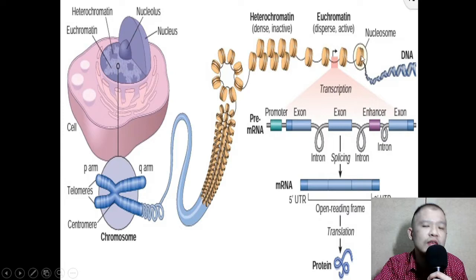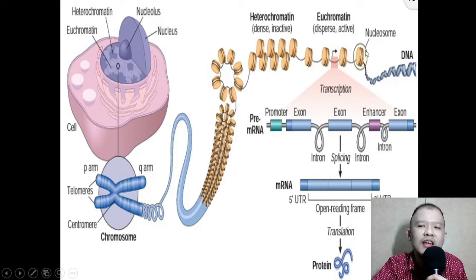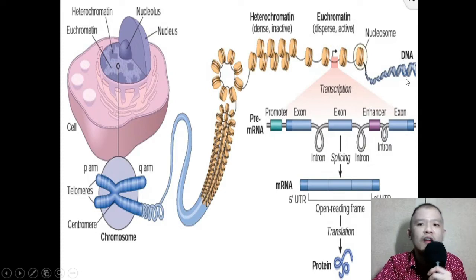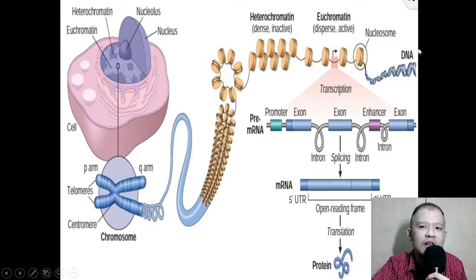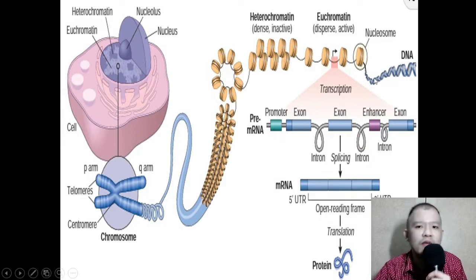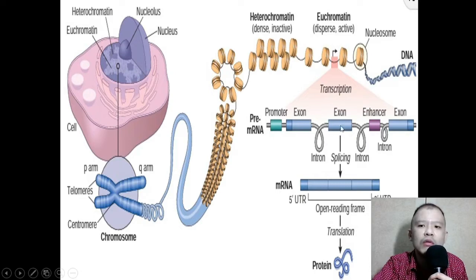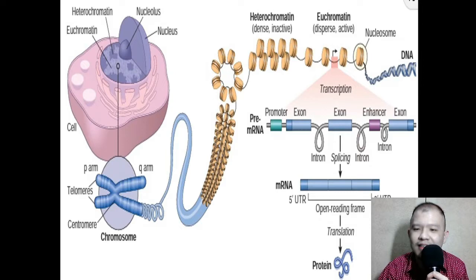The nucleosome is a unit composed of the histone, where the DNA winds around, and the DNA itself. If we untangle it further, we can appreciate the basic unit of genetics, which is the DNA. The central dogma of genetics states that DNA can be replicated by itself into another DNA, or it can also be transcribed into an RNA. After all the splicing — removing the non-protein-coding parts of the RNA — this RNA is translated into amino acids, which form the protein.